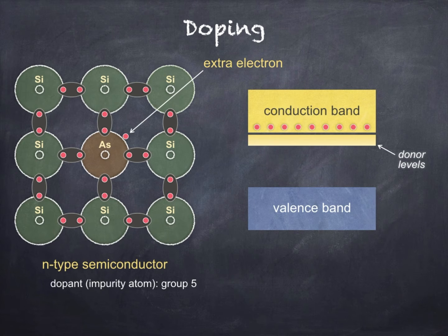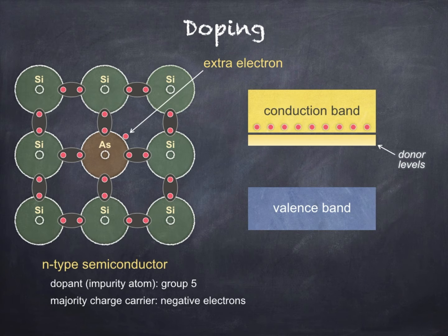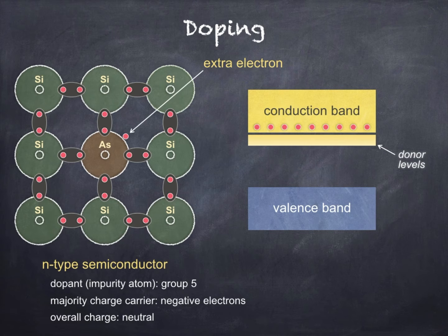Remember that we previously discussed the heating of an intrinsic semiconductor. For each electron which jumped from the valence band to the conduction band, there was one hole left behind in the valence band, meaning that in an intrinsic semiconductor, electrons and holes exist in equal number. When we dope the semiconductor, however, this is no longer the case. In an N-type semiconductor, the majority charge carriers are electrons, and holes — which are still present — will be very much in the minority. Despite the majority charge carriers being negative electrons, an N-type semiconductor is still electrically neutral, since the impurity atom, arsenic in this case, will have an equal number of electrons and protons.